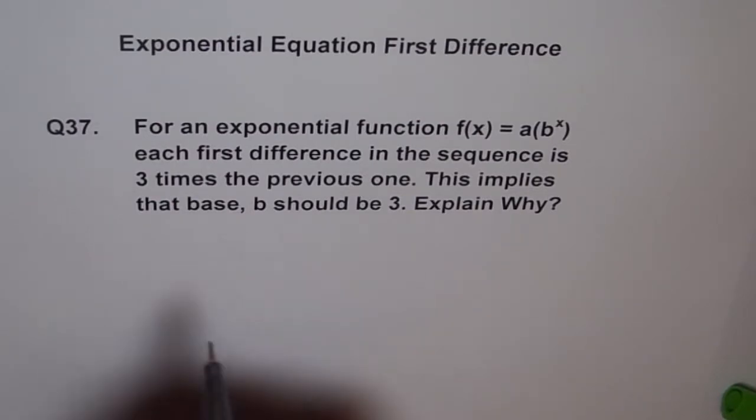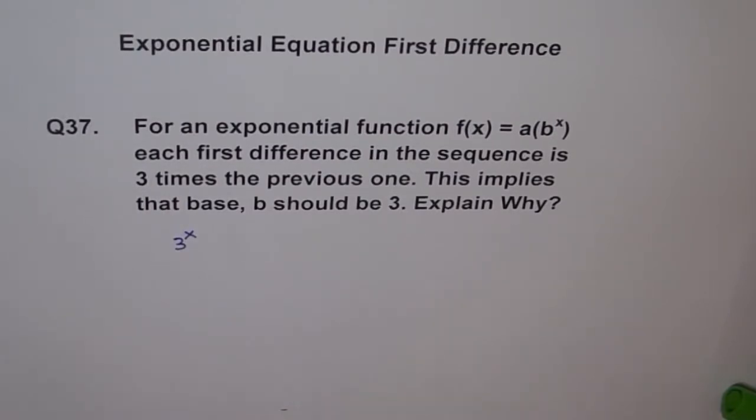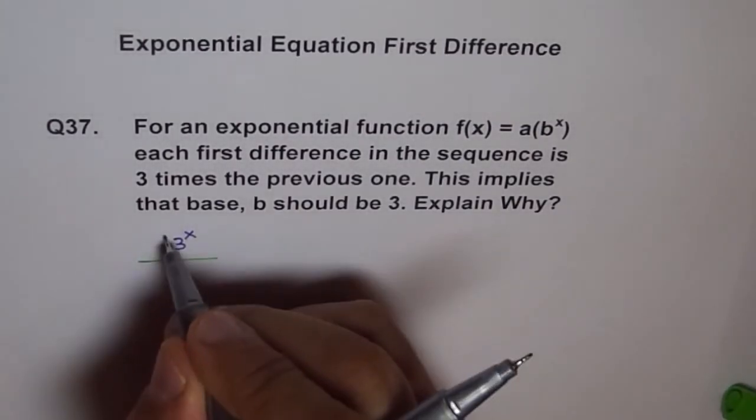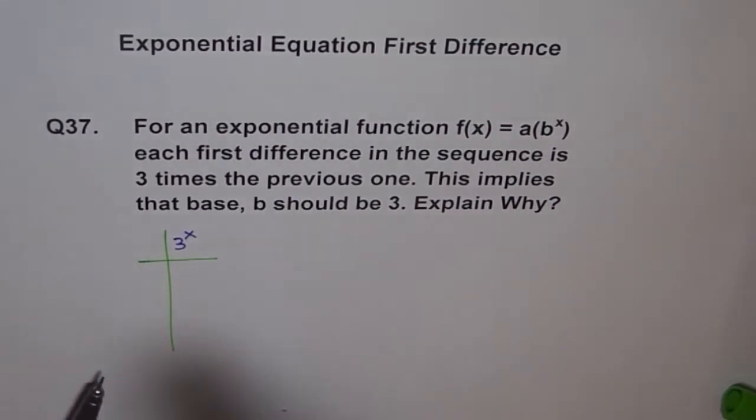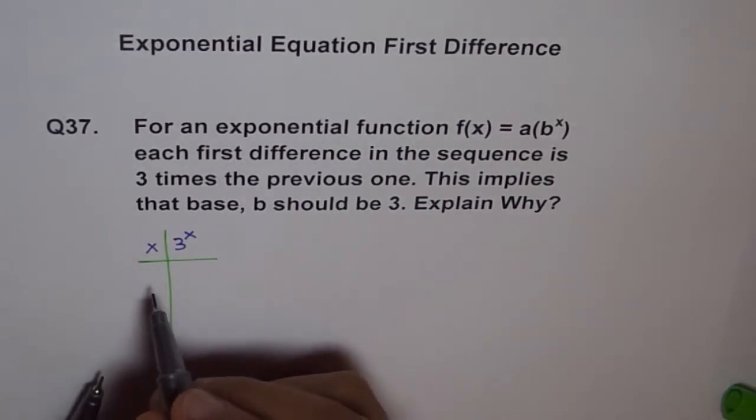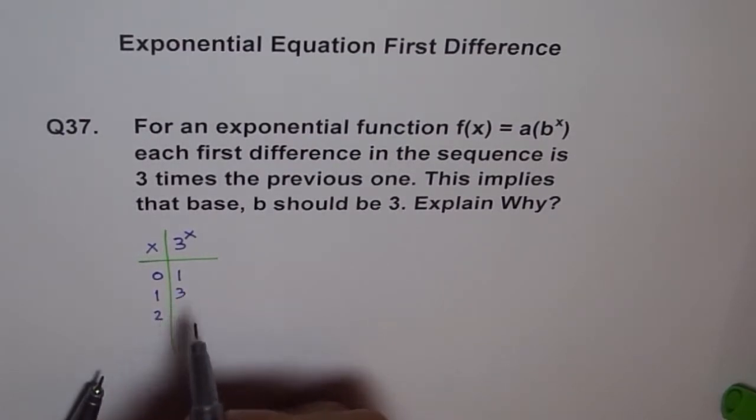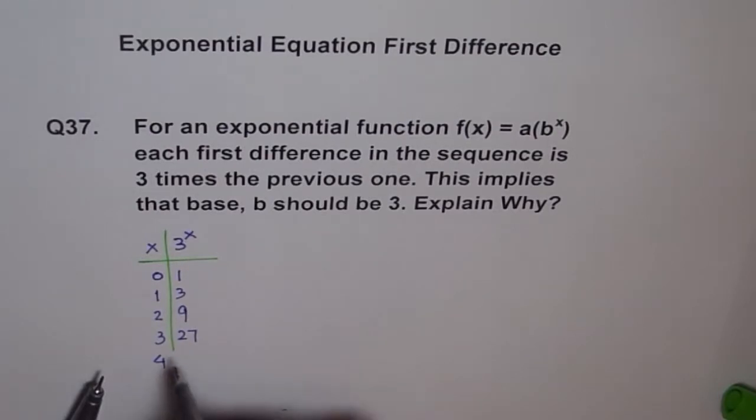Let us say b is 3 and then we have a function 3 to the power of x. Now for this function, let me write down the values and then check the first difference. Let's write some different values for x and the function value. Let's take, for example, 0. So anything to the power of 0 is 1, and if I take 1, 3 to the power of 1 will be 3, and for 2, 3 to the power of 2 is 9, and for 3 it is 27, and for 4 it is 81.